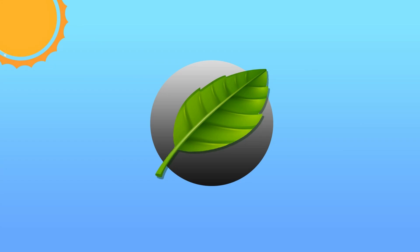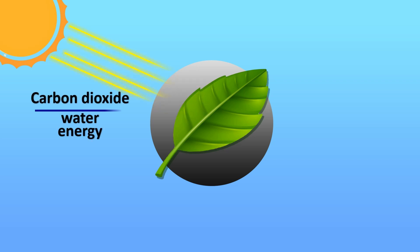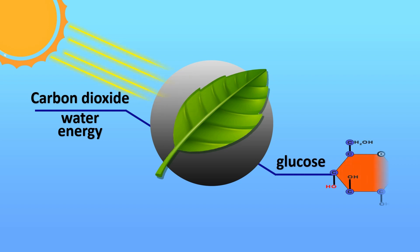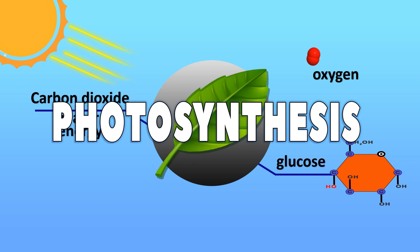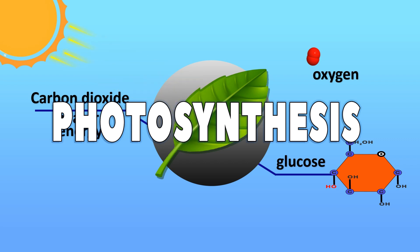Photosynthesis is one of the most important biological processes on earth. It allows plants, algae, and some bacteria to convert light energy from the sun into chemical energy stored in glucose. In this video, we'll explore the major events in photosynthesis, focusing on the two main stages: the light-dependent reactions and the light-independent reactions. These stages work together to fuel life on our planet.